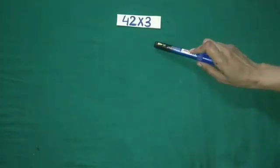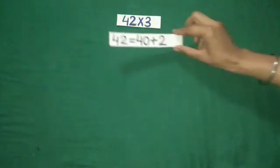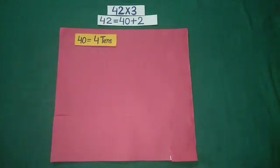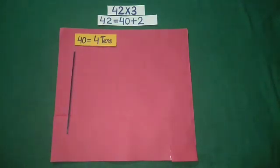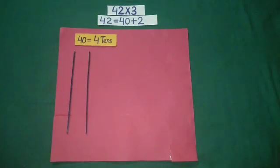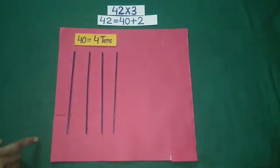To multiply 42 with 3, first we split 42 into 40 plus 2. 40 is equal to 4 tens. To represent tens, we will use blue colored sticks. For 4 tens, we use 4 blue colored sticks placed vertically.